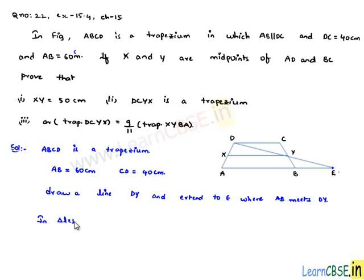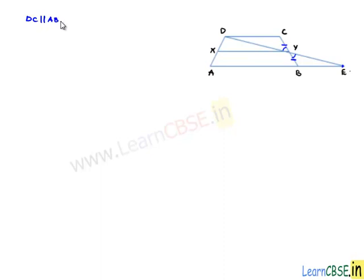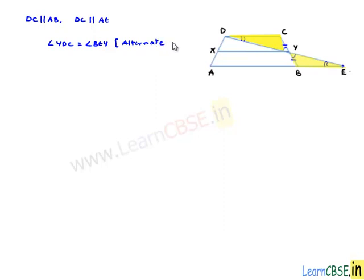To prove the first proof, consider triangles DCY and BEY. CY is equal to YB since Y is the midpoint of BC. Angle DYC is equal to angle BYE since these are vertically opposite angles. As DC is parallel to AB, DC is also parallel to AE, the extension of AB. So angle YDC is equal to angle YBE since they are alternate interior angles when lines DC and AE are parallel with DE as transversal.